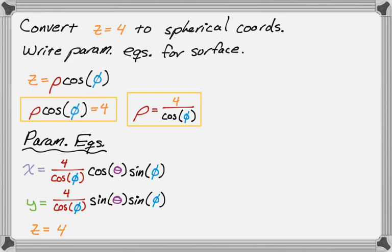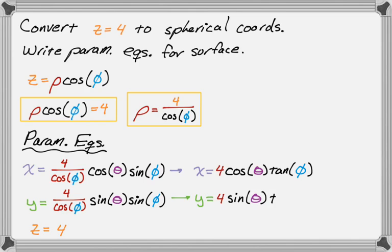Okay, so we're basically done. This I can rewrite, 4 cosine theta, and then sine over cosine is tangent of phi. And then y is 4 sine of theta, and then tangent of phi. And then z is still just 4.